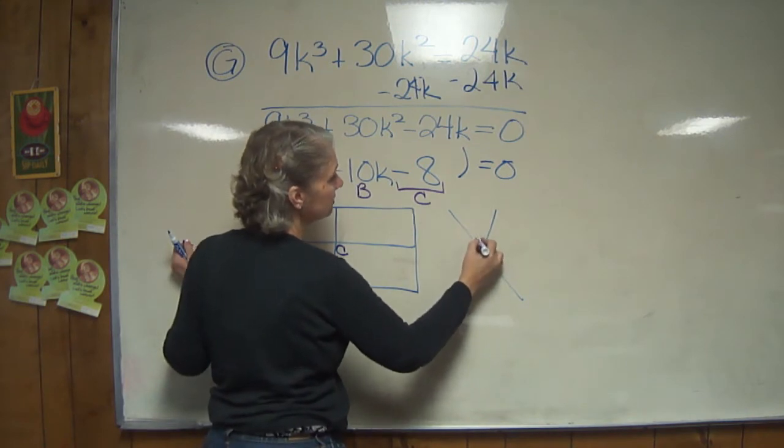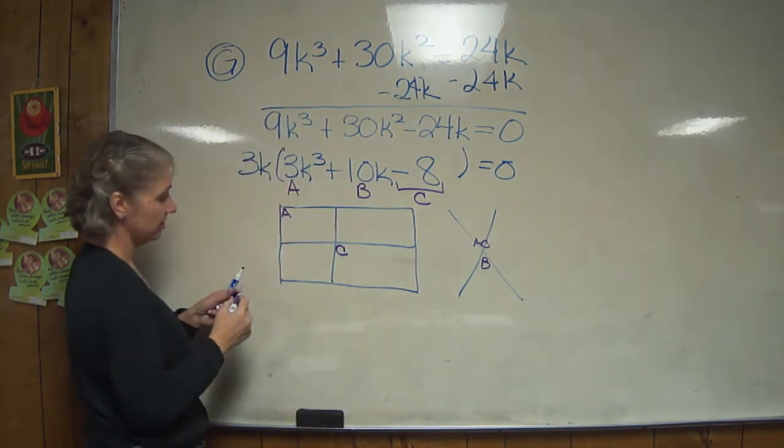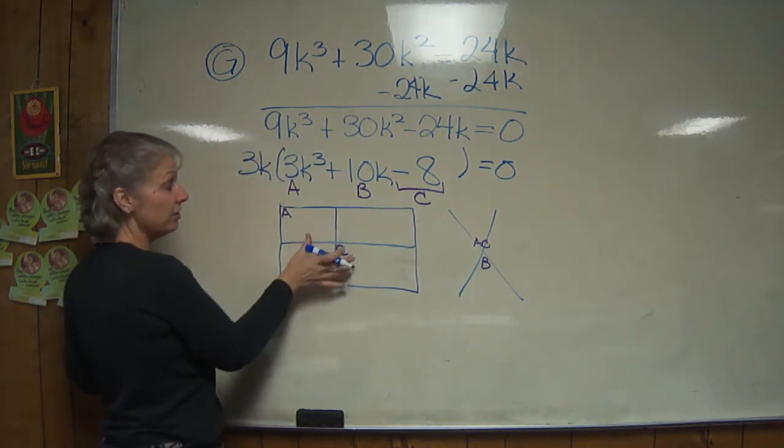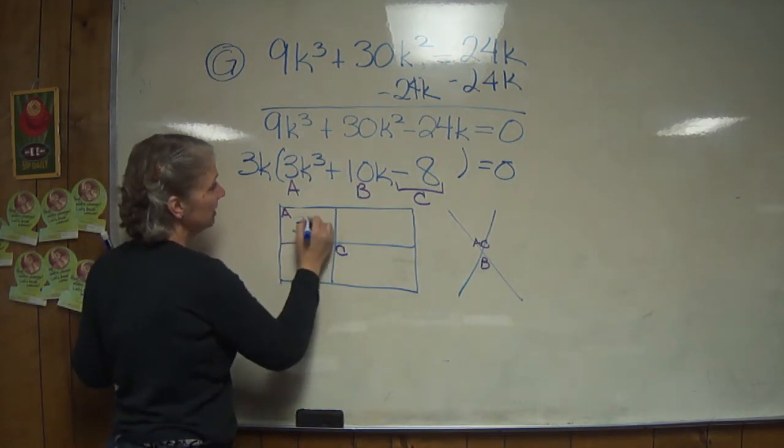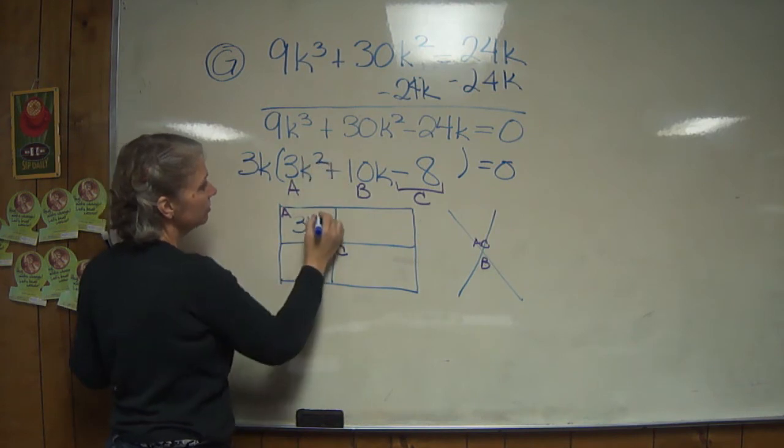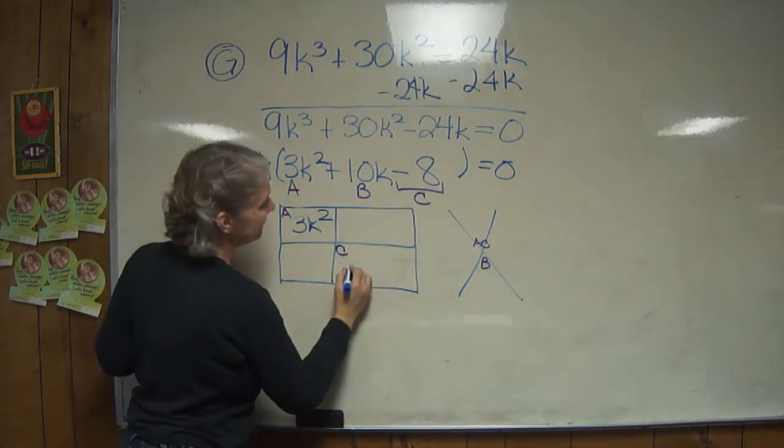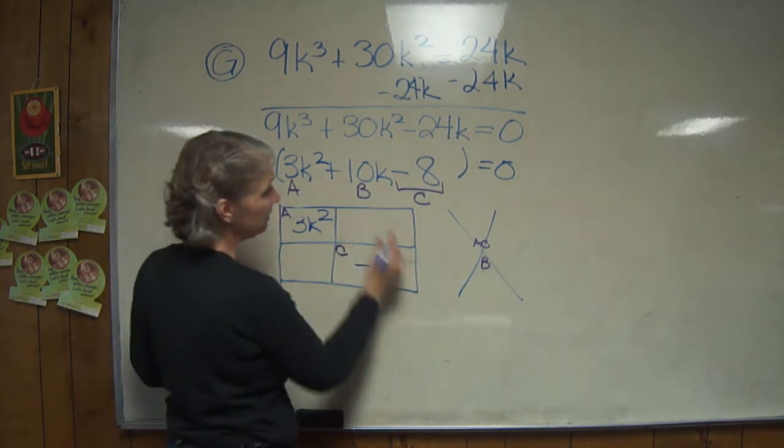a goes here, c goes here, b goes here, and the product of a and c, so a times c, goes here. And we only use variables in the box.